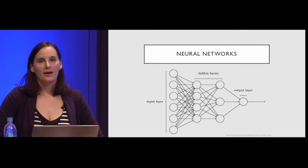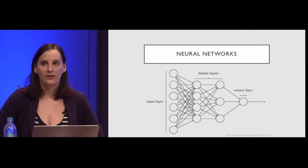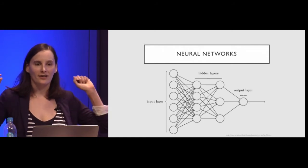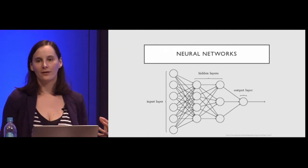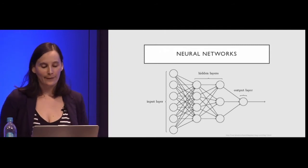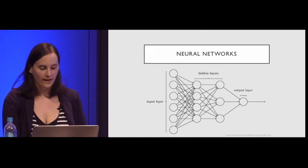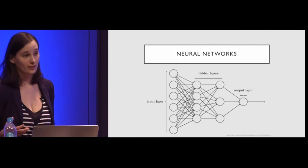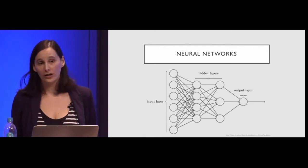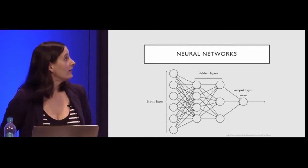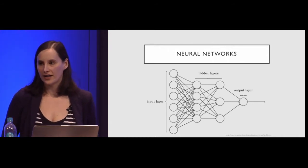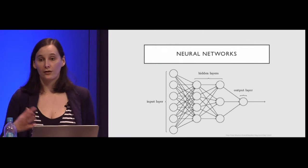And then finally, the big beast in the room: neural networks. Most people have encountered these because they are such a hot topic. They really exploded since 2012 when the world realized we have enough computing power to do truly awesome things with them. The way they work is you have one input layer — you can have as many or as few inputs as you want. The most impressive uses to date have been for images, where each pixel is one of your inputs.